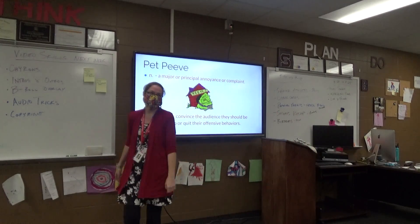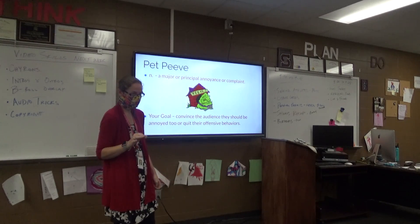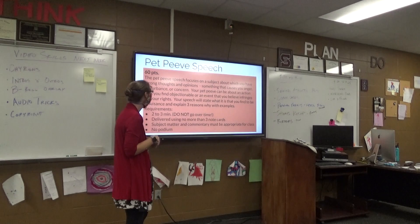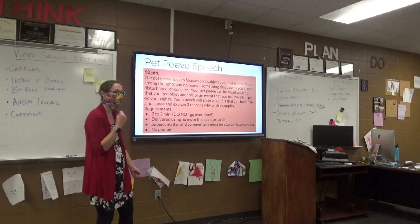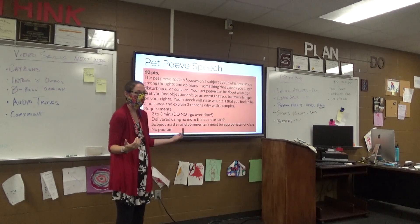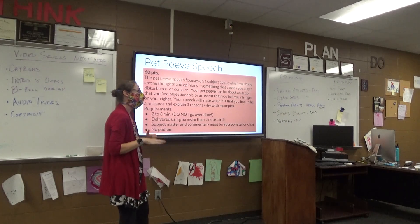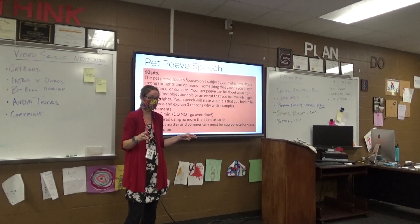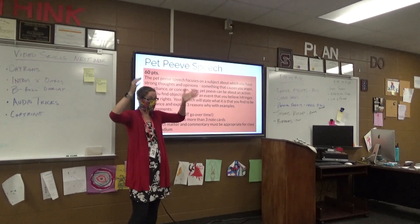Pet peeve: a major or principal annoyance. Your goal in this speech is to convince the audience that they should be annoyed too, and if they're an offender, to quit it. The pet peeve speech is worth 60 points. It focuses on a subject about which you have strong thoughts and opinions — something that causes you anger, disturbance, or concern. Your speech will state what you find to be a nuisance and explain three reasons with examples. You need to be between two and three minutes on this speech, so make sure you're filling that time but not going over.